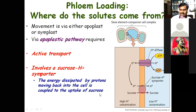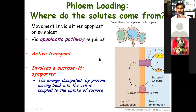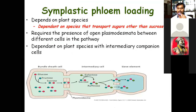Both the symplast and apoplast ways may require energy, though most of the time the apoplast way does not require energy. The energy is provided by ATP, which is continuously synthesized by photosynthetic activity and is present in large amounts in the mesophyll tissue, involved in movement of food material out of the cell.